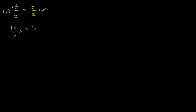To solve for x, you just multiply both sides by the inverse of 13 over 6, which is 6 over 13. These cancel out, and you get x is equal to 5 times 6, which is 30 over 13.